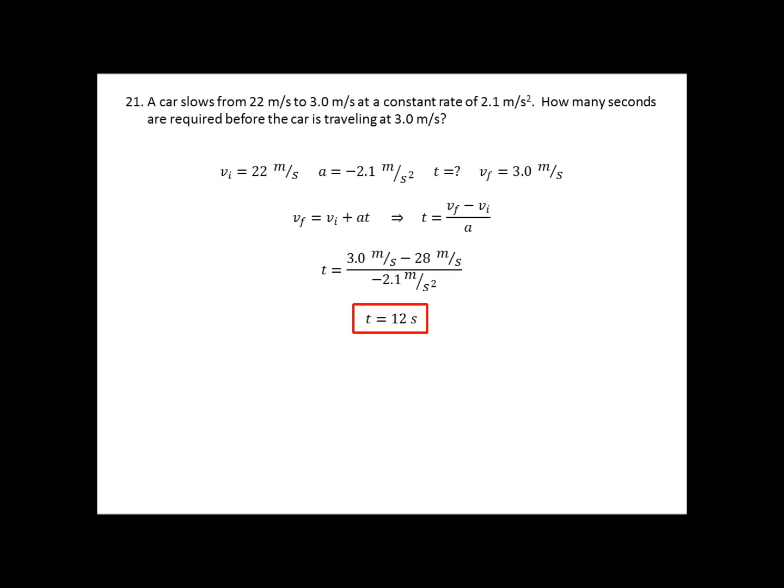Everything gets plugged in, and I end up with 12 seconds. Now, again, I set my acceleration to be a negative because it's slowing down. That acceleration is pointing in the opposite direction. If you forget to do that, what you're going to end up with is a negative time. You'll end up with a negative 12 seconds. Now, really, some common sense should tell you time can't be negative. So, go ahead. If you do it, just drop the negative and box in your answer. No harm, no foul.